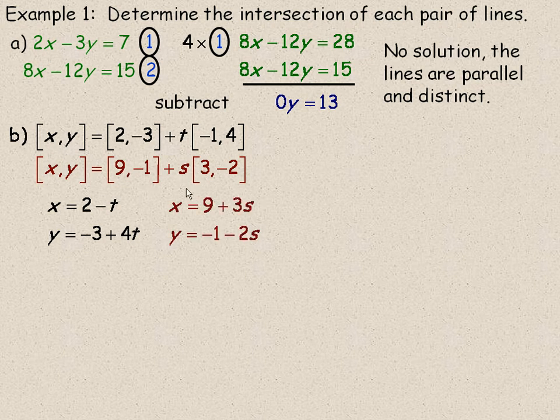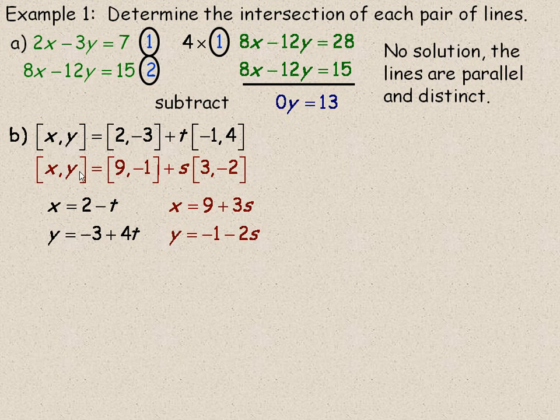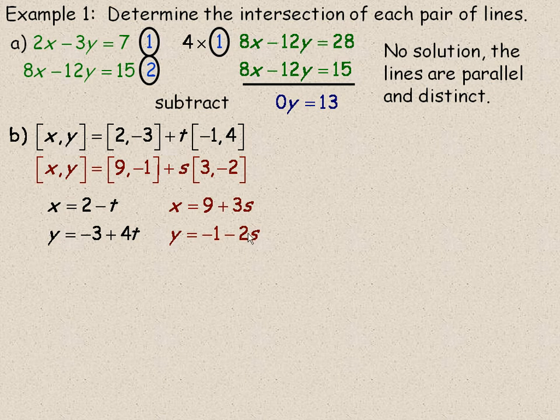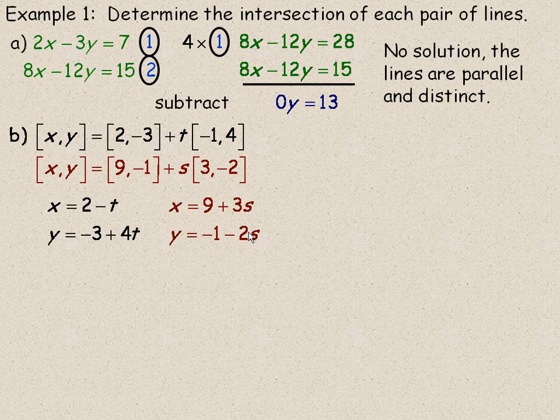And we will do the same thing with the reddish brown one here. x would be 9 plus 3s, and y would be negative 1 minus 2s. Remember when you are writing out parametric equations and you have two or more lines in the same question, don't use the same parameter for each one. If I use t for the first one, then use a different letter to represent the parameter for the second equation, and any subsequent ones as well.